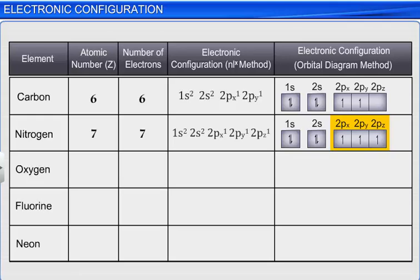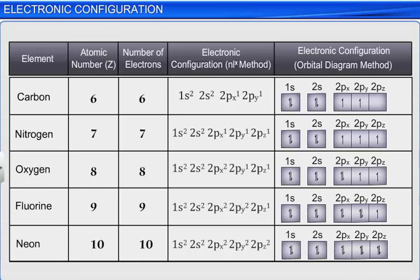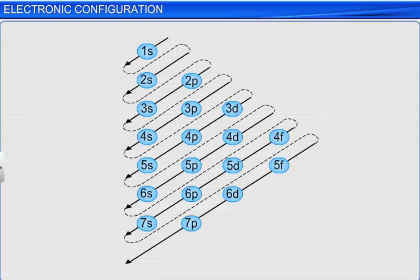Oxygen has eight electrons, Fluorine has nine, and Neon has ten electrons. In each of these elements, after filling the first four electrons in the 1s and 2s orbitals, the remaining electrons enter into the next higher orbital, 2p, according to the Aufbau principle. They successively occupy the three 2p orbitals — 2px, 2py, 2pz — in accordance with Hund's rule. The pairing of the 2p subshell starts with Oxygen and completes with Neon.